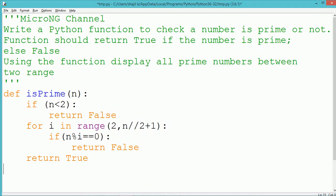Hello, this tutorial is to discuss a Python program to write a function to check a number is prime or not. The function should return the value true if the number is prime, otherwise false.